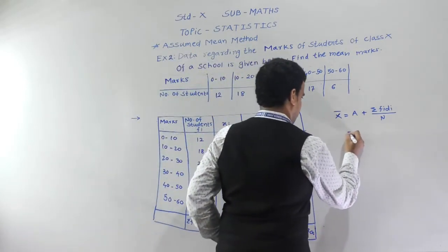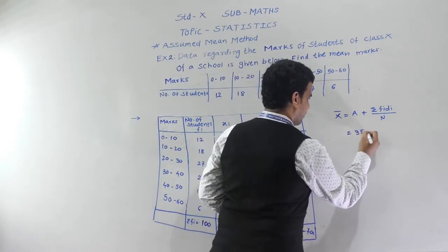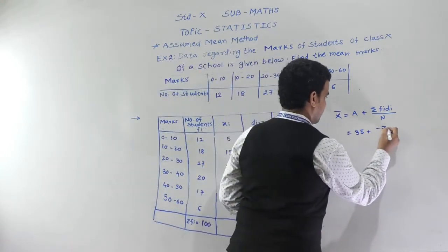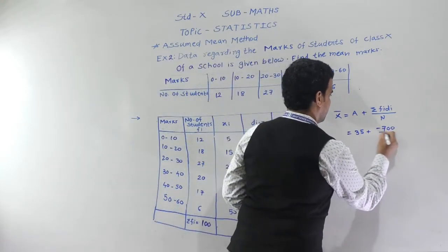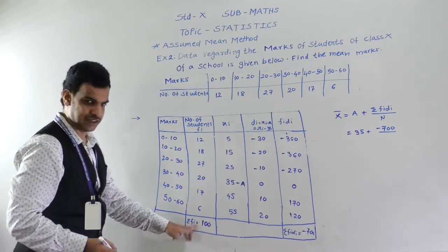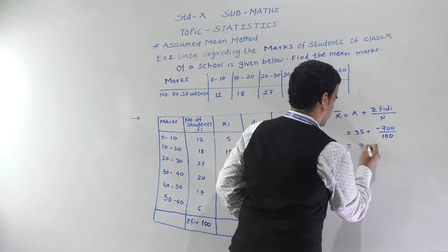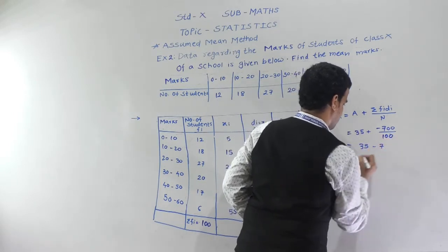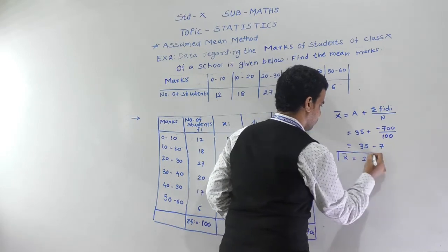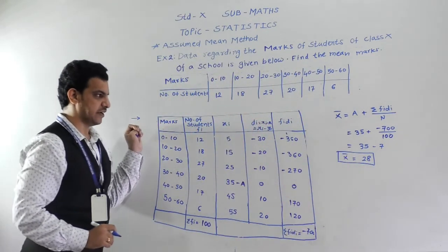Applying the formula: x̄ = A + (Σfi·di / n) = 35 + (−700 / 100) = 35 − 7 = 28. Therefore x̄ = 28, meaning the mean marks of the students is 28.